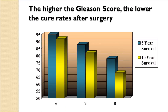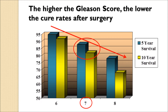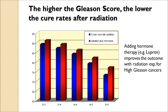The higher the Gleason score, the lower the cure rate. In a graph showing survival with surgery, a Gleason 6 has a very good 5- and 10-year survival. By Gleason 7 it's lower, and by a Gleason score of 8 it's much lower. Similar data exists for radiation — again, the higher the Gleason score, the lower the cure rate.